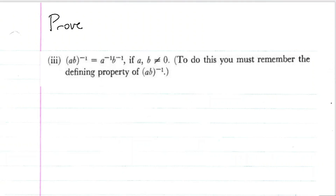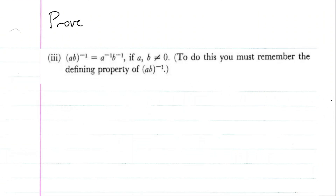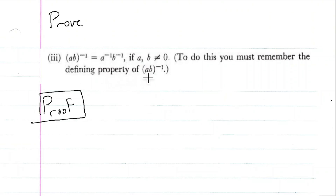Today we're going to prove the property of the product of multiplicative inverses, which states that (ab)⁻¹ is equal to a⁻¹b⁻¹, if a and b are not equal to zero. This problem comes from Michael Spivak's Calculus, chapter one, problem number three, part three. What he tells us to do is remember the defining property of a times b inverse.